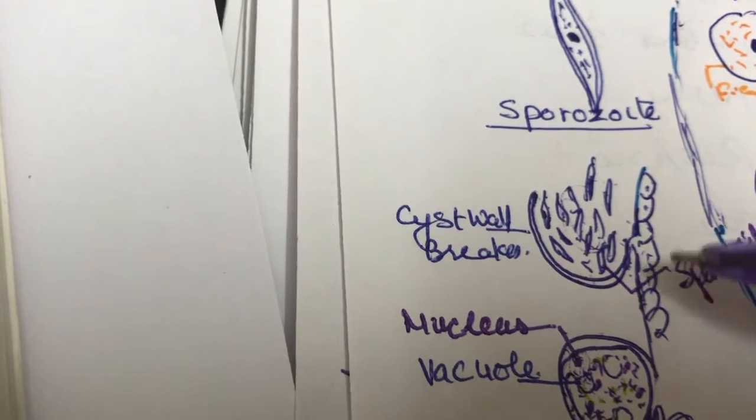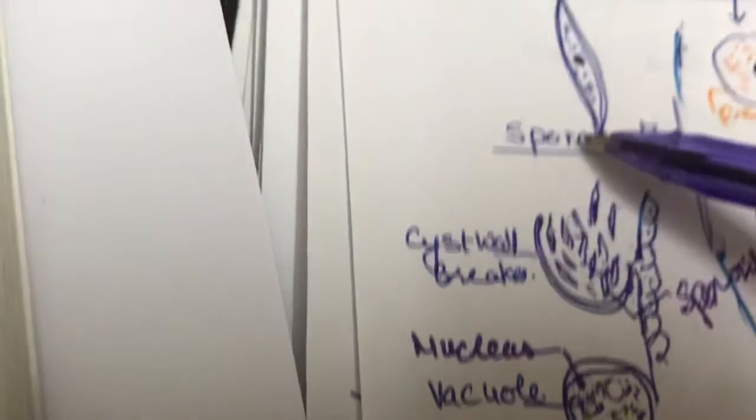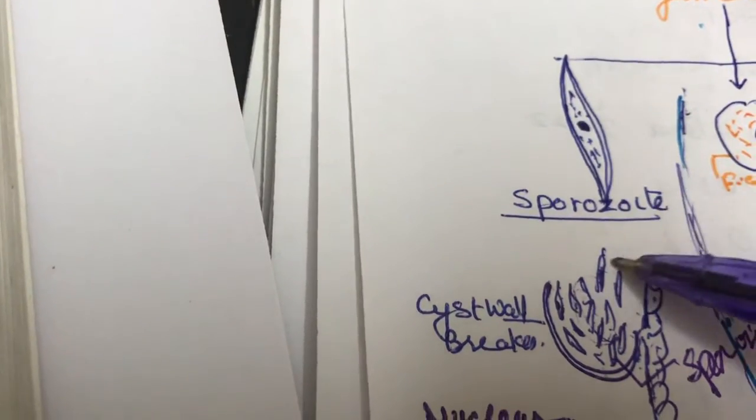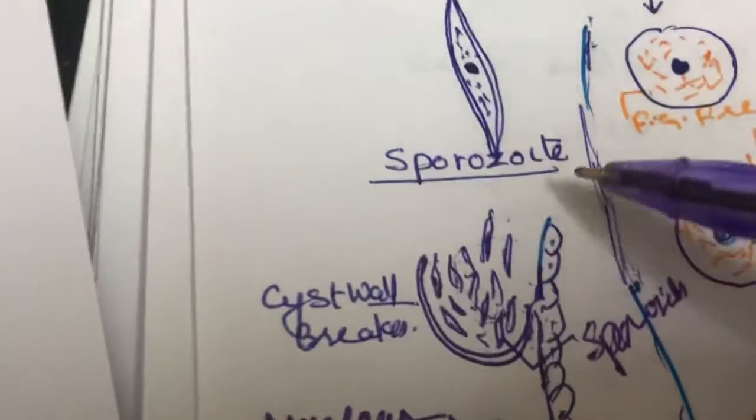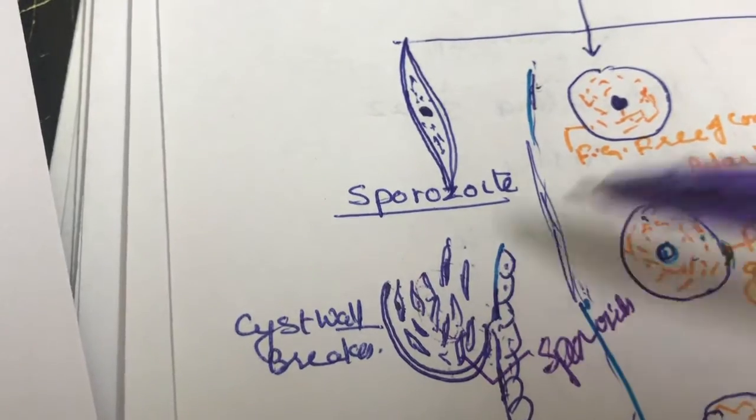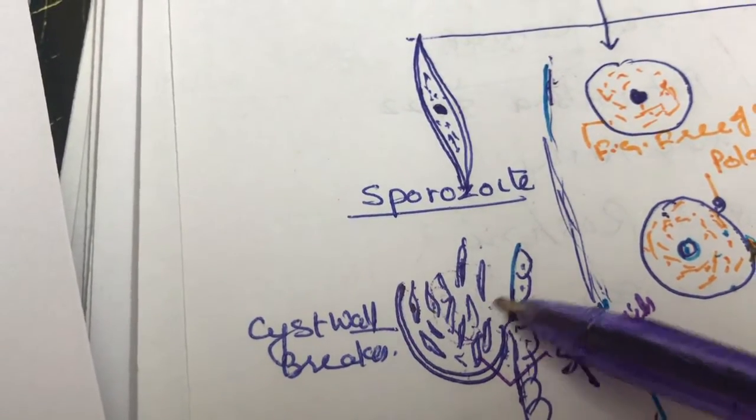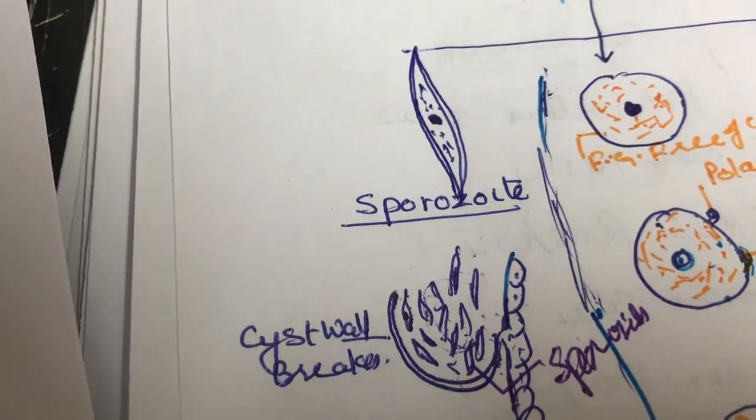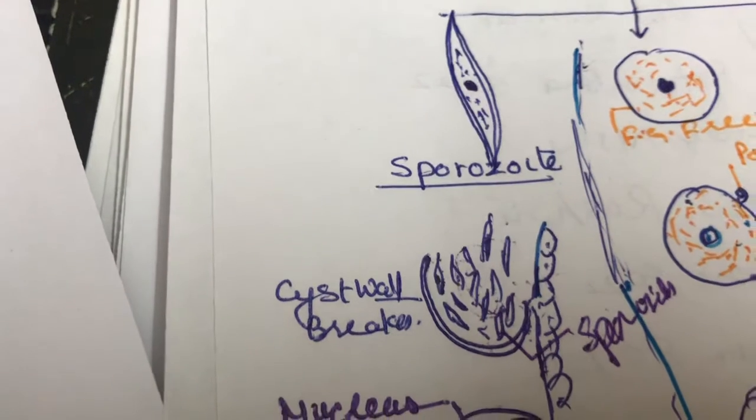When they break the wall they set free and ultimately all these sporozoites become free from the body cavity. From the body cavity they reach to various places. I can show here the structure of the sporozoite: surrounding wall, nucleus and cytoplasm. All these become free and can go to different organs.